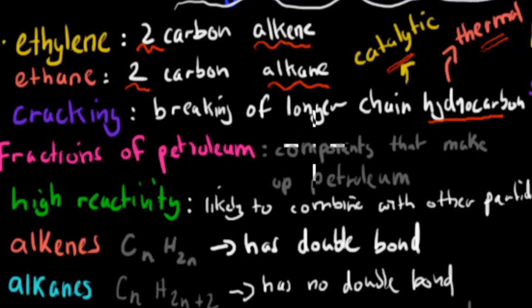Fractions of petroleum are the components that make up petroleum. We have long-chain ones, gas, petrol. Petroleum is a mixture, and fractions of petroleum are the individual parts that make it up. Higher reactivity is the likelihood of two particles combining. If it's unreactive, they won't combine, whereas if it's reactive, they will combine.